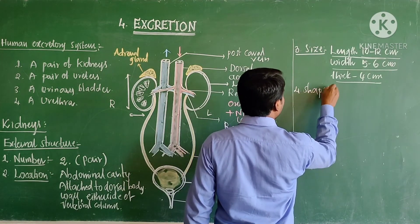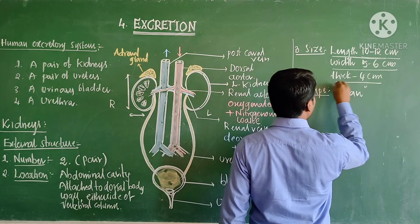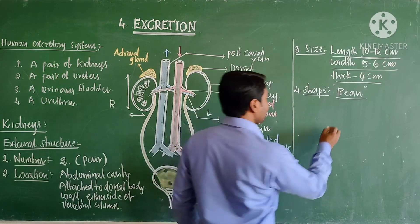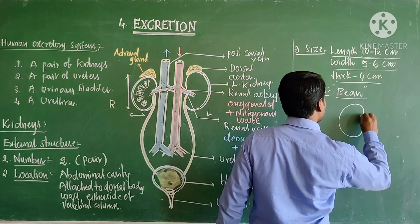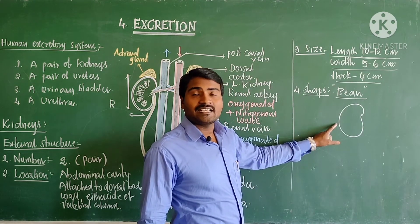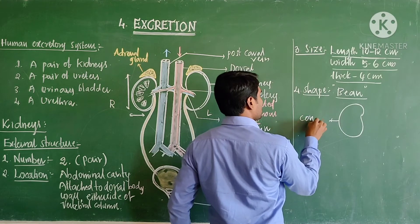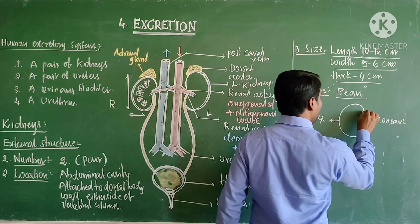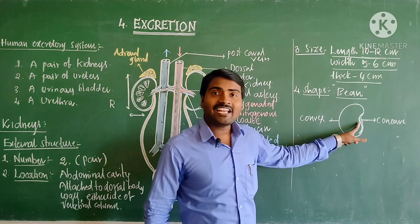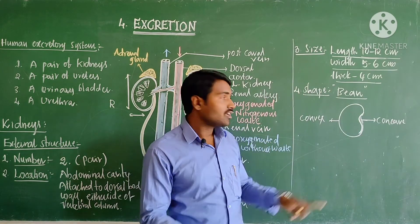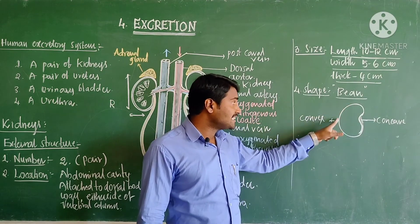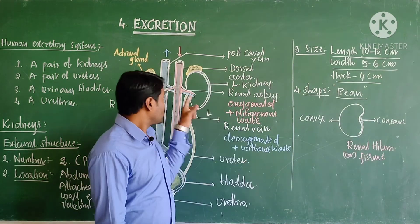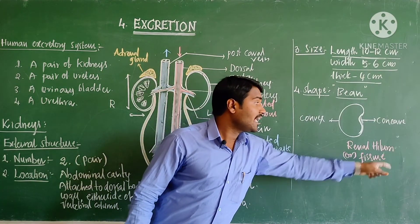What is the shape of the kidney? Bean shape. The outermost region is convex in nature, and the inner region is concave in nature. This inner concave region shows a notch. So the external surface is convex whereas inside it is concave, and this concave part of the kidney is called the renal hilum.